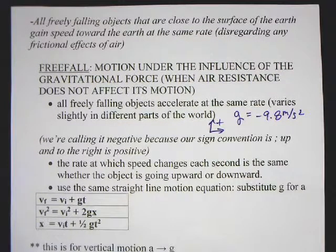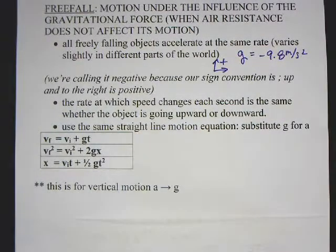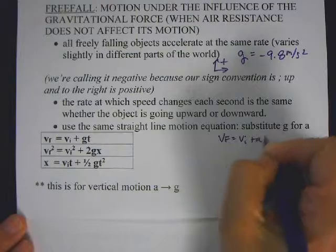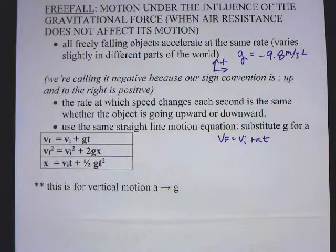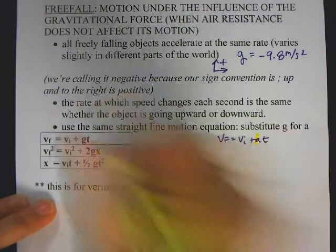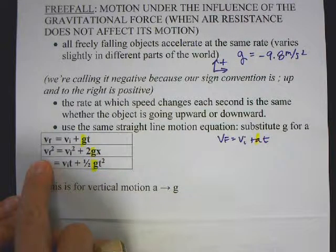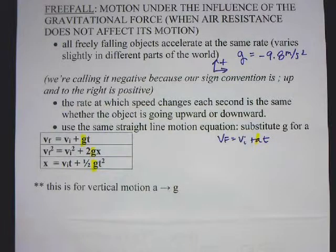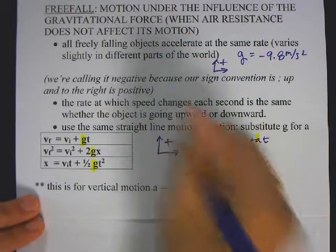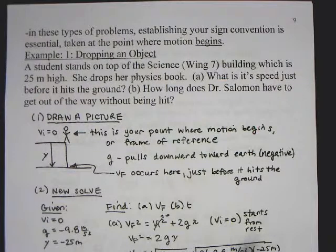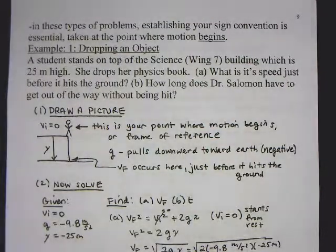So how does that affect what we're doing? We've learned three kinematic equations. The equation vf equals vi plus at becomes vf equals vi plus gt. vf squared equals vi squared plus 2ax becomes vf squared equals vi squared plus 2gy. And because we're talking about vertical motion, we use y instead of x, so: y equals vi·t plus one half g·t squared. All you do is replace every 'a' with 'g'.